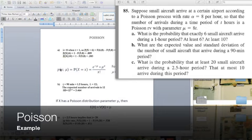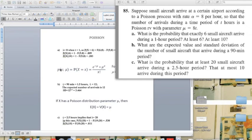Okay, so let me explain Poisson distribution with one example. So the question I found was, suppose small aircraft arrive at a certain airport according to a Poisson process with rate alpha equals to 8 per hour, so that the number of arrivals during a time period of t hours is a Poisson random variable with parameter mu equals to 8t.